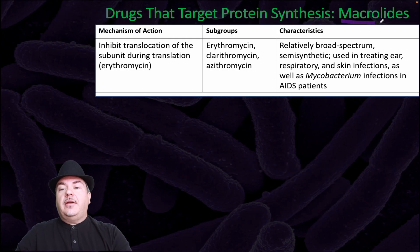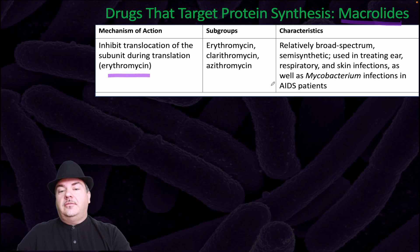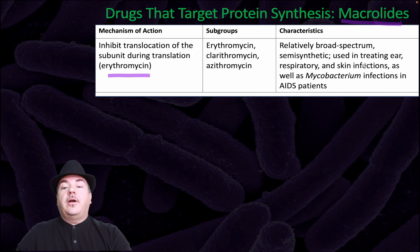The macrolides inhibit translocation of the ribosomal subunit during translation — for example, erythromycin. They are relatively broad spectrum and semi-synthetic, used in treating ear, respiratory, and skin infections, as well as Mycobacterium infections in AIDS patients.